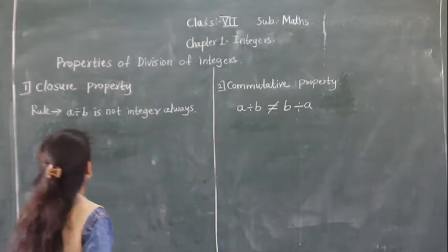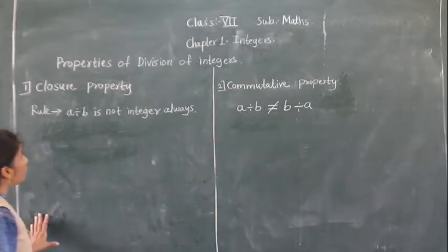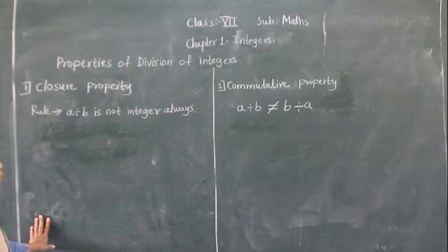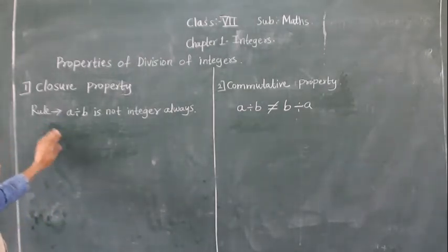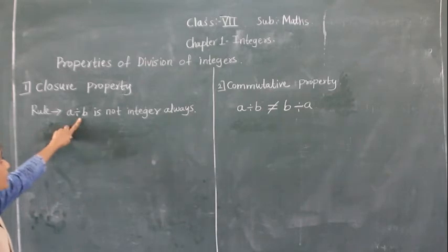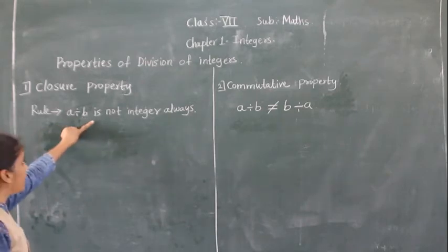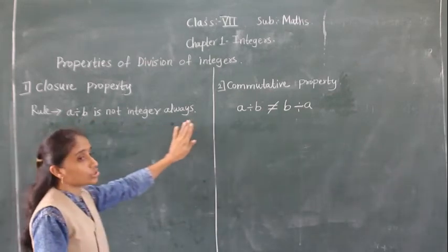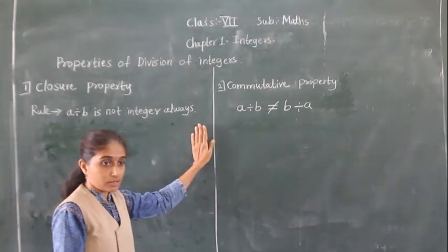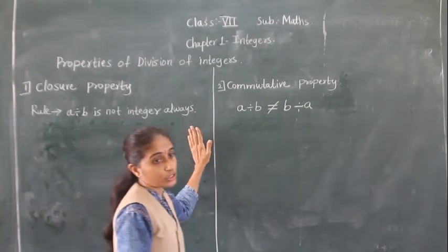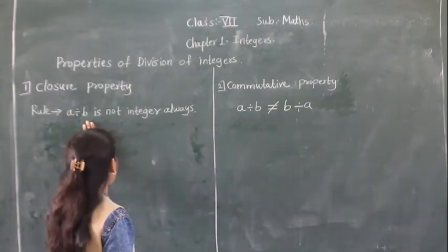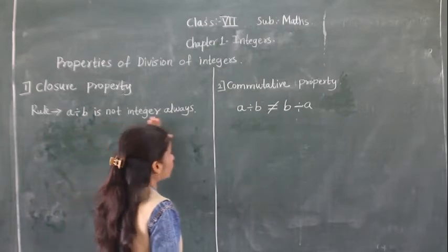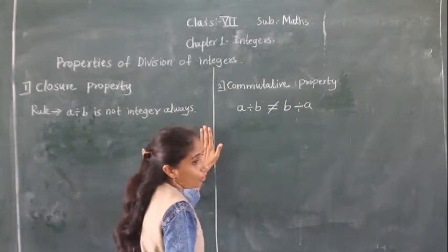Let's see the properties of division of integers. The first property is the closure property. The rule is: A divided by B is not always an integer.